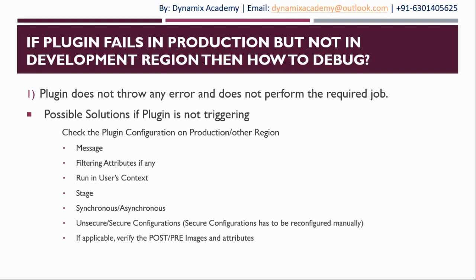Sometimes the plugin stage — synchronous or asynchronous — is not configured properly. Also, secure and unsecure configurations used in your plugin may not have been created on the production environment. Especially for secure configuration: if you are moving plugins to production via a solution and your plugin code uses secure configuration, the secure configuration will not automatically move from one environment to another when moving through solutions. Secure configuration must be reconfigured manually on each environment where the plugin is registered. You also need to verify that any post or pre-images and required attributes are set correctly on production, and that the image names match what the development region and code expect.